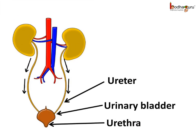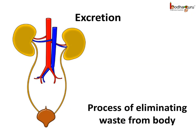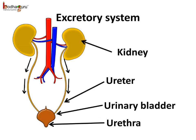From the kidneys, the urine goes into two tubes called the ureters, and then it gets stored in the urinary bladder for a short time. It is passed out through the urinary opening at the end of a muscular tube called the urethra. This process of eliminating harmful substances from the body of a living organism is called excretion. The organs — kidneys, ureters, urinary bladder, and urethra — form the excretory system in our body.